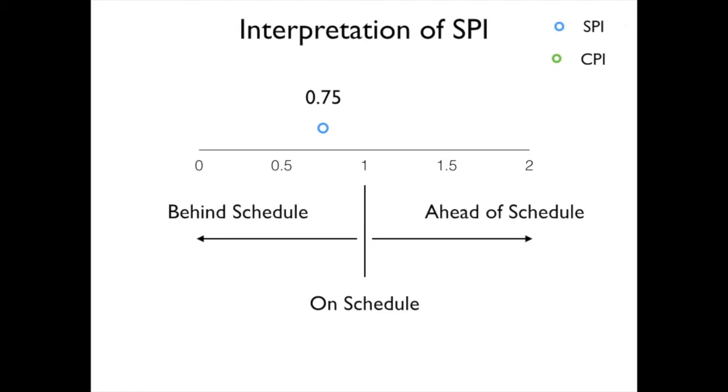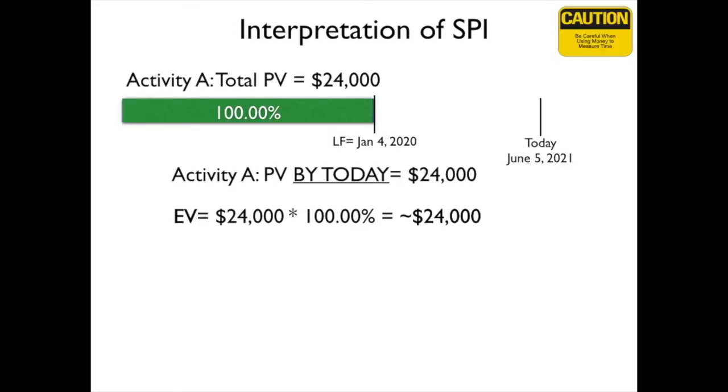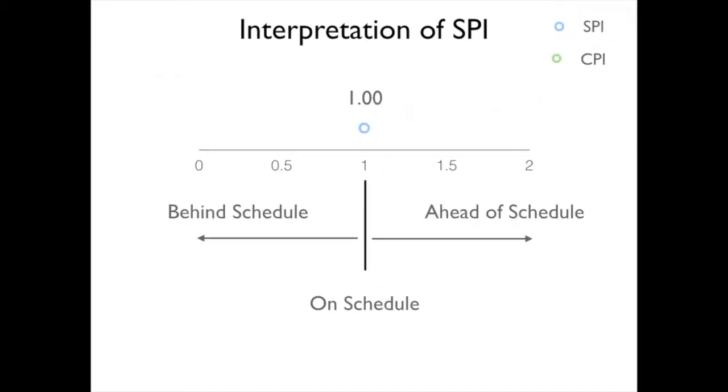But let's look at it and say that we have gone ahead and we have gotten it done. We finally got it done 18 months later. Well, our SPI is now 1, indicating that we are, in fact, on schedule. When we are not, we know that we are 18 months late in getting this particular activity done.